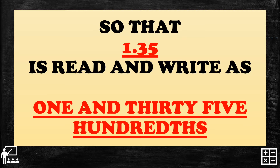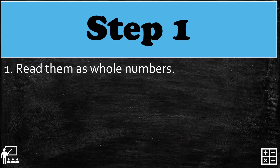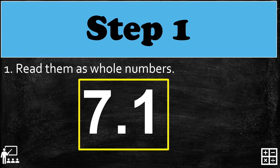So one point thirty-five is read and written correctly as 'one and thirty-five hundredths.' Again, we use 'and' because we have a whole number part. We do not use 'and' if we don't have a whole number part.